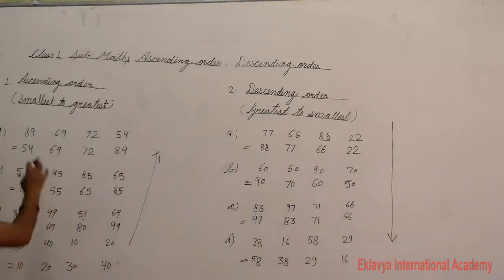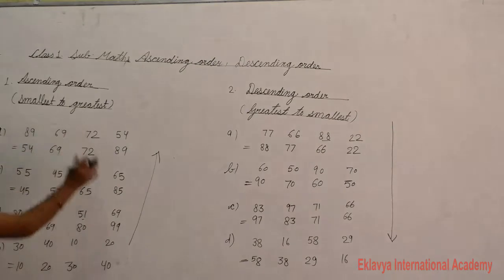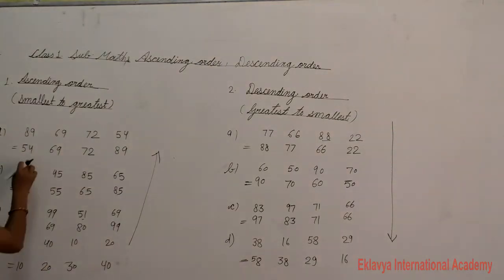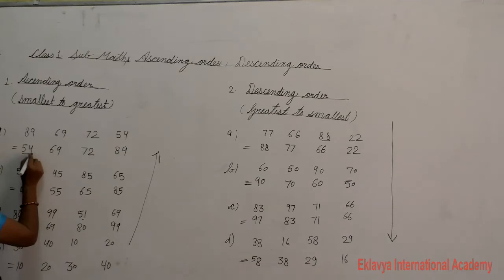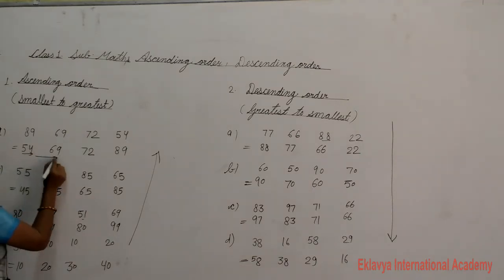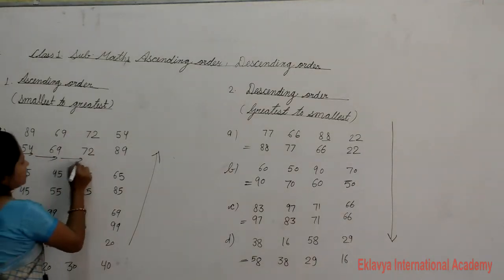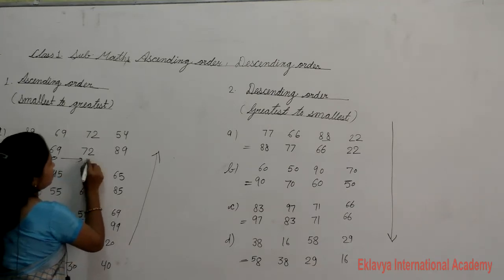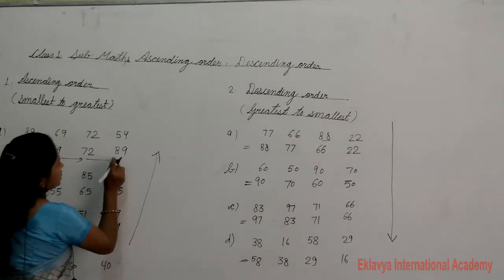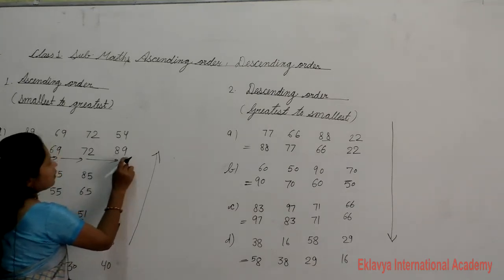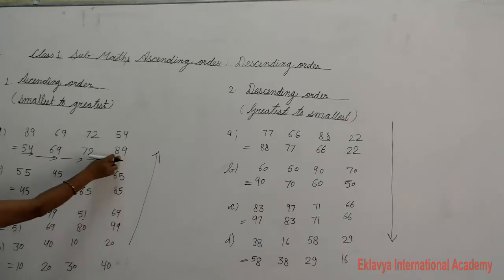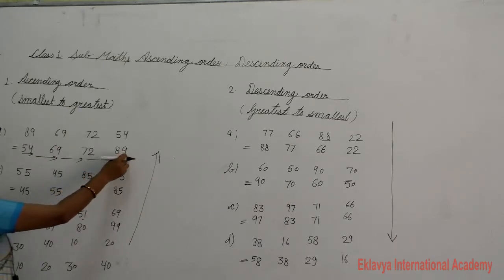Now look at the board. Ascending order means smallest to greatest. The smallest number is 54, then increasing to 69, then 72, then 89. So 89 is the greatest.